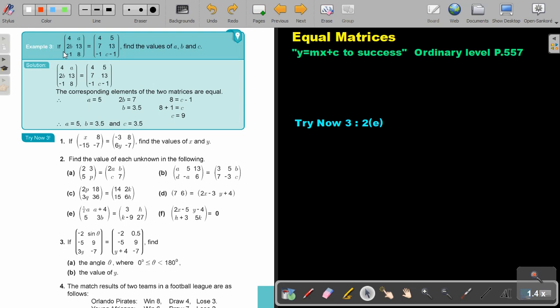If we say that this matrix is equal to this matrix, we must find the values of A, B, and C. Now remember, if it's equal, then the elements in the same positions are equal. So this is equal to this, A is equal to 5.